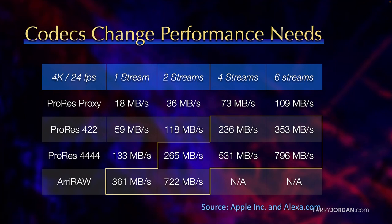ProRes Proxy ranges from 18 to 109 megabytes per second, depending upon the number of streams playing at once. ProRes 422 is between 60 and 350 megabytes per second. ProRes 4444 is 130 to 800 megabytes per second. And Arri RAW — which I included because more films are shot on Alexas than any other camera — gives maximum color grading flexibility. This assumes a 4K picture, 16x9 aspect ratio, 24 frames a second: 360 megabytes for a single stream and 720 for a dual stream. Assume 720 when editing single-camera work.